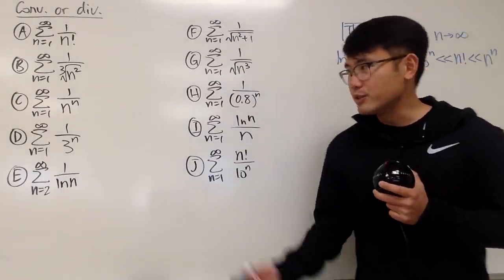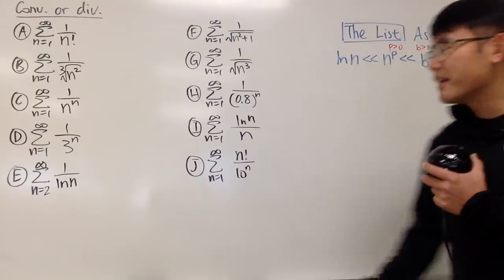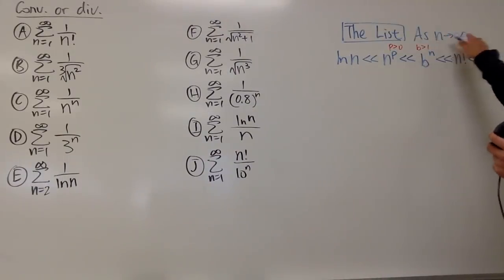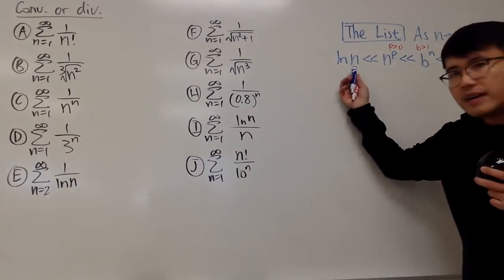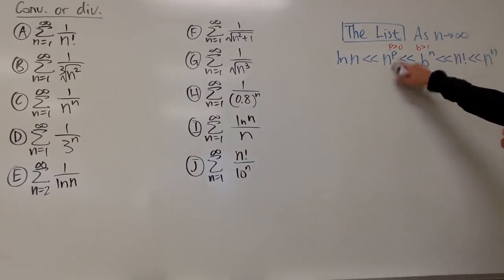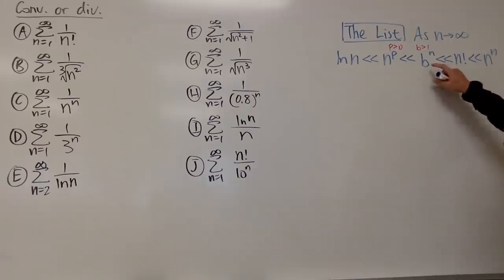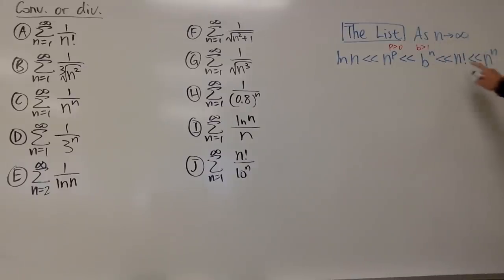Now hopefully you guys had a chance to try them, so let's go over them. The list says as n goes to infinity, we have natural log of n as the smallest infinity, then n to the p-th power where p is a positive number, then b to the nth power where b is greater than 1, then n factorial, and then n to the nth power.